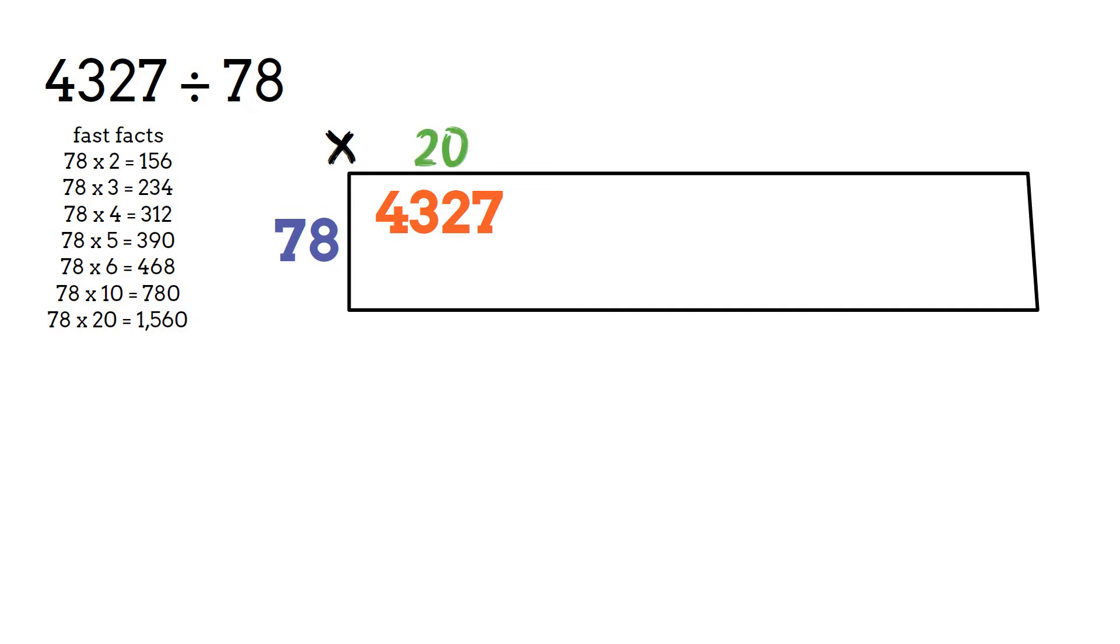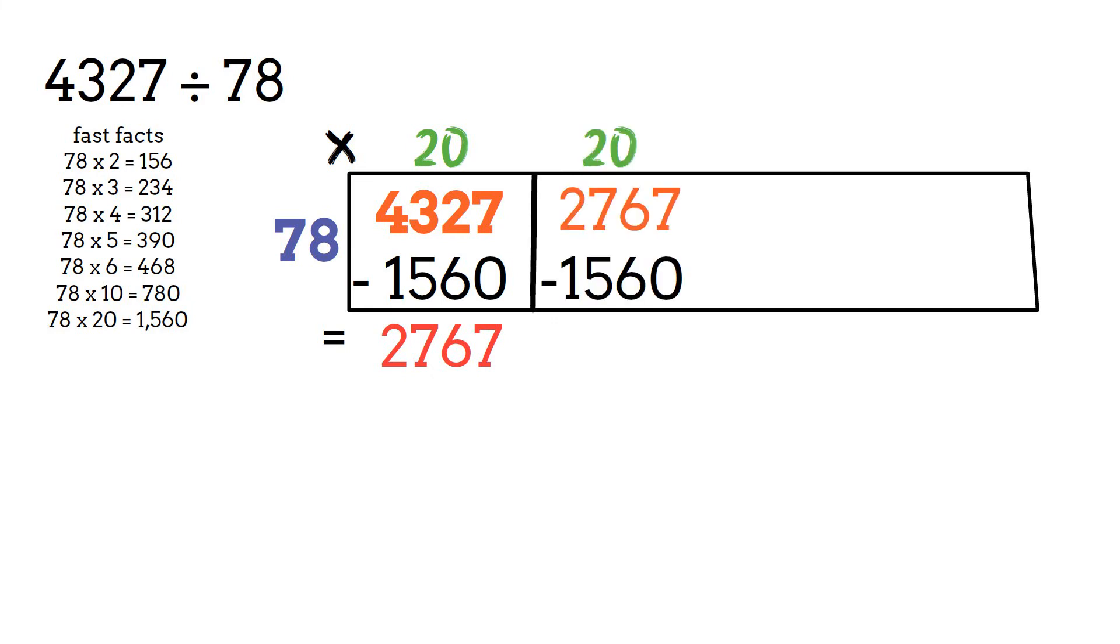Let's start with 20. 78 times 20 equals 1560. Subtract just like we did in the first example. Let's do that again with 20. We get 1207.